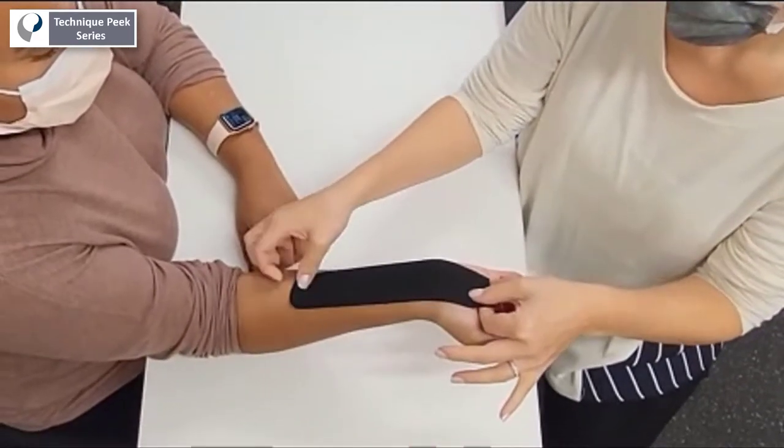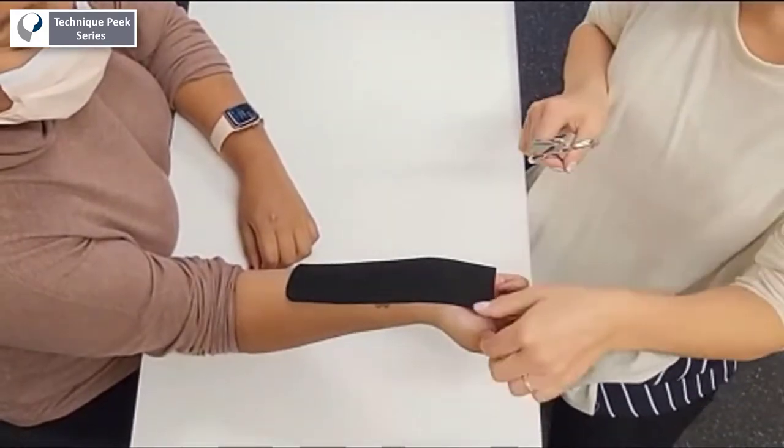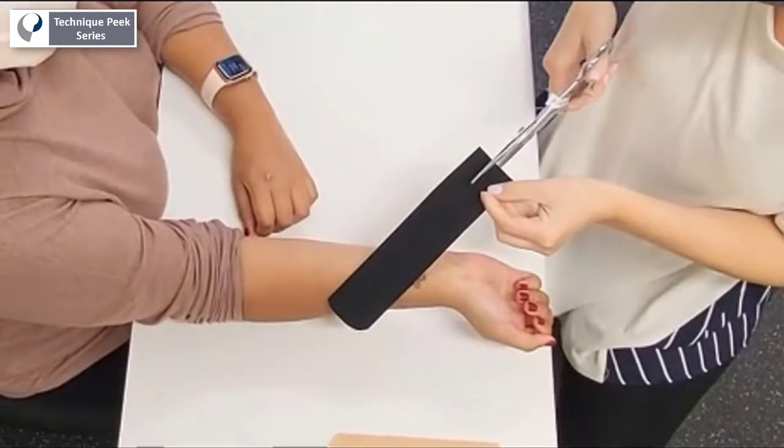Today we're going to look at a kinesio tape application for treatment of carpal tunnel. We're going to start with a strip extending from the carpal tunnel to about two thirds the length of the forearm.